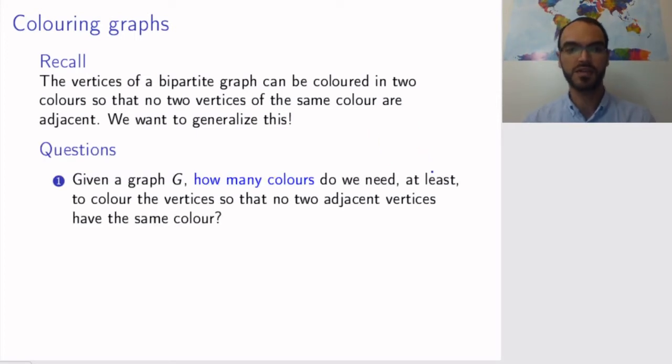The questions that we want to ask: the first question is given a graph that we don't know from the beginning if it is bipartite or we don't know anything about it, we want to determine how many colors we need to color this graph so that the edges will always go between vertices of different color. If we can answer this question, this tells us something about the structure of the graph and how complex the graph is.